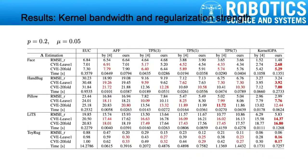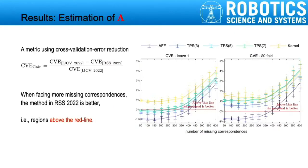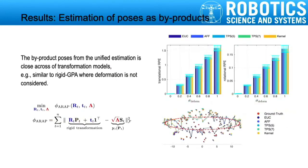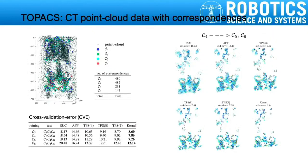We show the error statistics of different transformation models: Euclidean, Affine, TPS, and Kernel-GPA. In particular, Kernel-GPA gives the best performance. We compare the new lambda estimation method with the one in RJCV; for datasets with many missing correspondences, the proposed method is better. We check that the poses solved from the unified optimization are basically the same as those obtained from Rigid GPA. Lastly, we propose TOPX, a 3D point cloud dataset with correspondences, partitioned into categories; consistently, Kernel-GPA gives the best results.